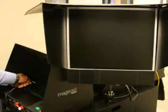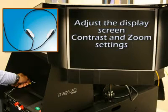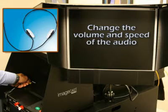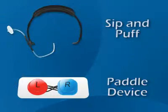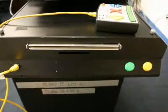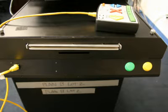At the beginning of your session, you will be able to adjust the display screen contrast and zoom settings using your accessible device. You will also be able to change the volume and speed of the audio. Some accessible devices do not allow you to change display settings once the voting session begins. If having the contrast or zoom adjusted will make your voting experience easier, let the inspector know, as these can be adjusted on the BMD machine for you.